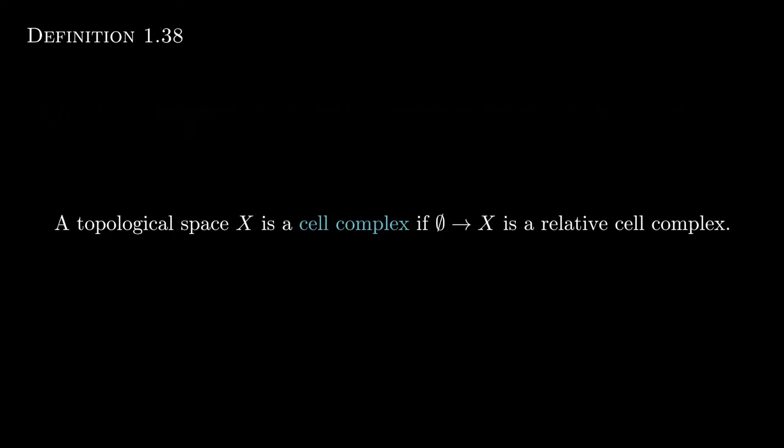Now a topological space is a cell complex if the function from the empty set to X is a relative cell complex. So again, a relative cell complex is a function, just a cell complex is a space. And what this is really saying is that we're constructing the space just from these cells. So we don't start from some space X, which is why we don't have that relative part on it.